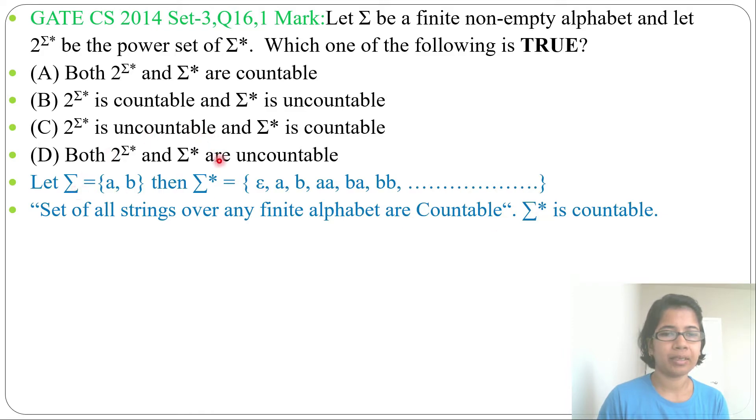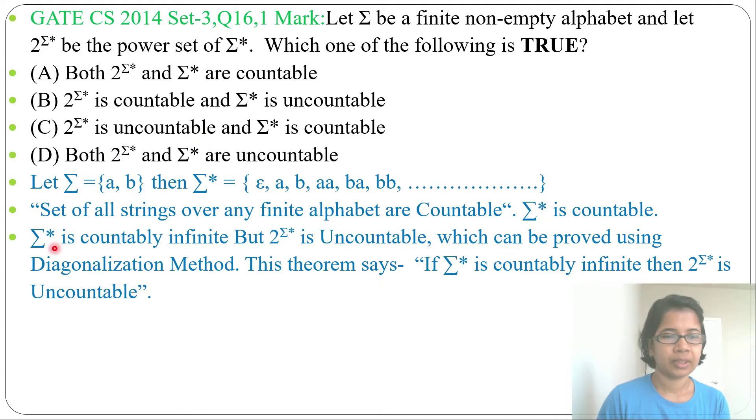That's why sigma Kleene closure is countable. Sigma Kleene closure is countably infinite, but 2 power sigma Kleene closure is uncountable, which can be proved using diagonalization method.